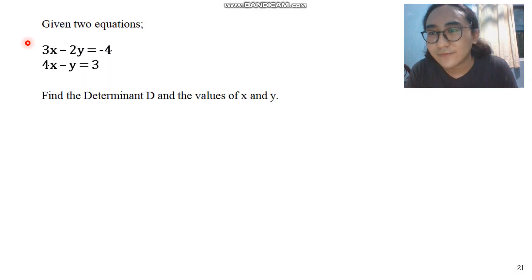For example, we have two linear equations here. 3x minus 2y is equals to negative 4. 4x minus y is equals to 3. So in order to find the solution for this using the Cramer's rule, we're gonna first find the determinant D.